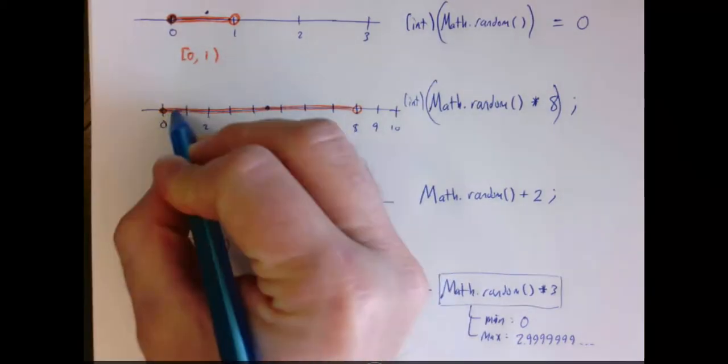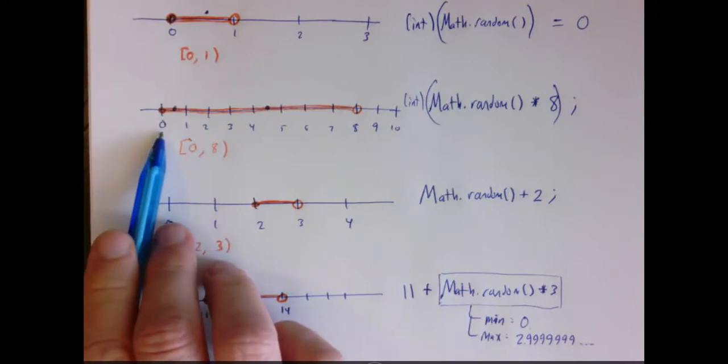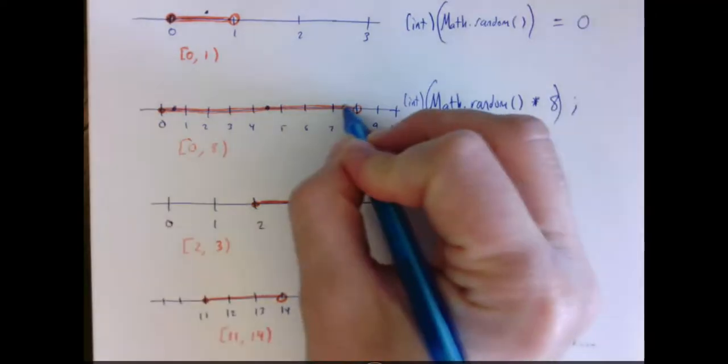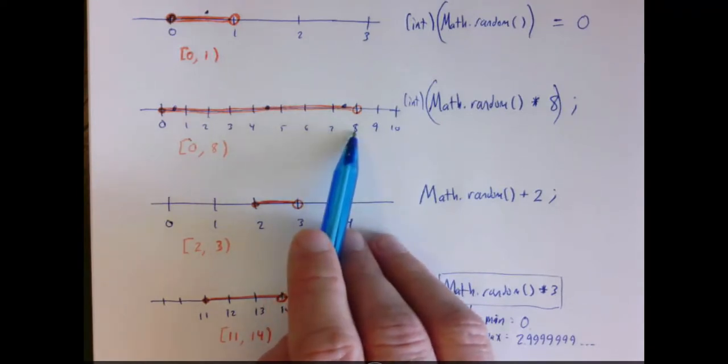If I generate a random number here, it's 0.something, casting to int would make it 0. If it's up here, it's 7.something, casting to int would make it 7. But notice that it's impossible to get the integer 8.